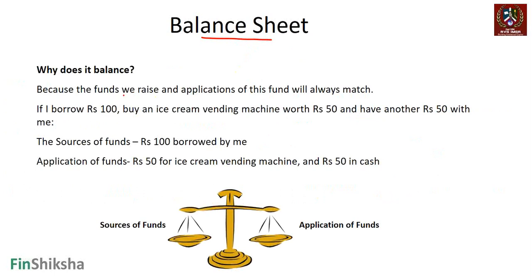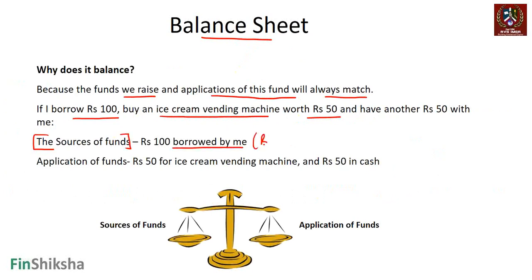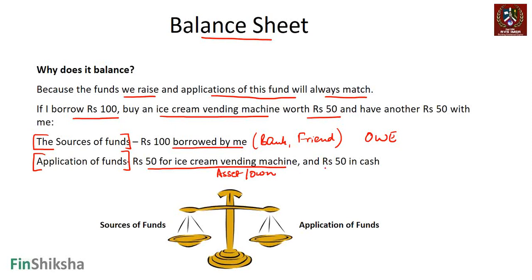Why will it always balance? Because the funds we raise and the applications of those funds will always match. Let's say you borrow 100 rupees, buy an ice cream vending machine worth 50 rupees, and keep 50 rupees in cash. Your source of funds is 100 rupees borrowed - that's what you owe to someone. You've applied that money by buying a machine, which is an asset you own, and 50 rupees remaining in cash is another asset.